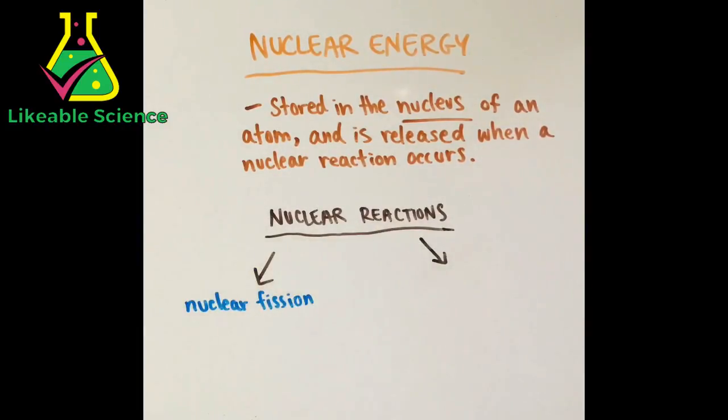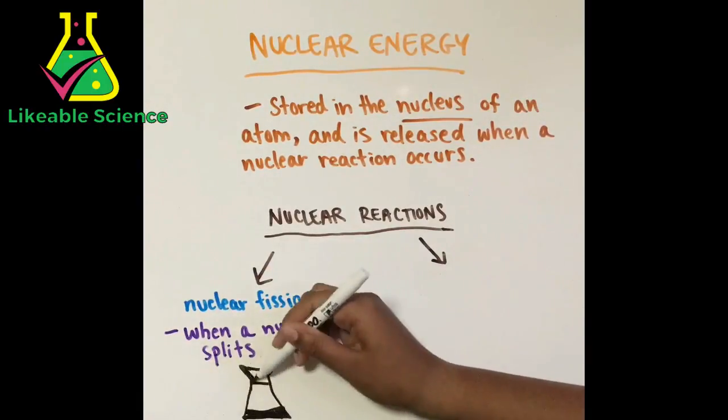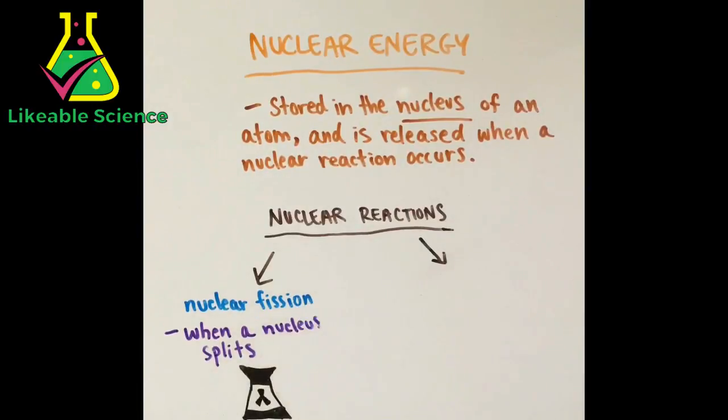One of them is nuclear fission which is a nuclear reaction that happens when a nucleus splits. Nuclear power plants use nuclear fission to produce electricity.